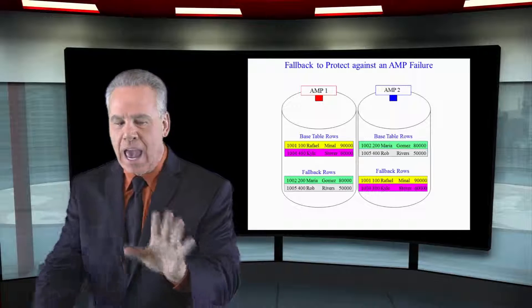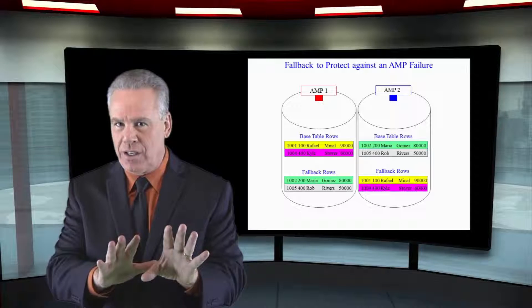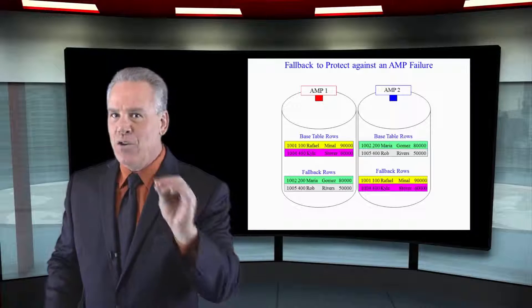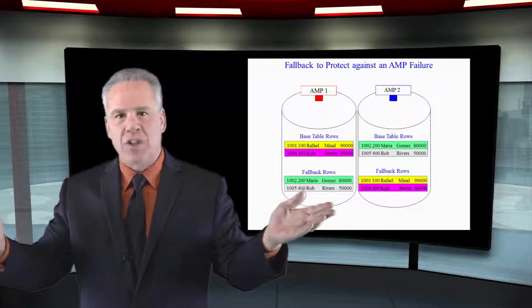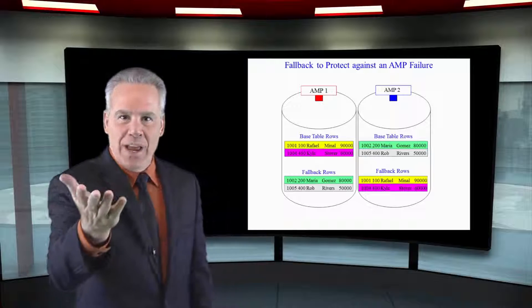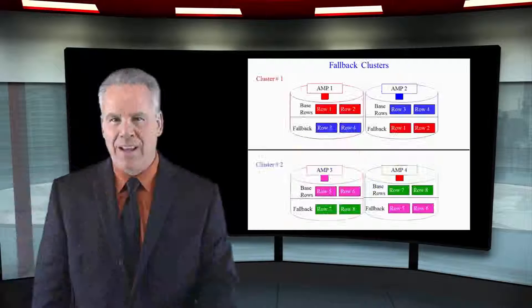So fallback has to be actually requested because you're afraid you could lose an AMP. And if you do, the system just keeps right on rolling because the data can be read by another AMP.